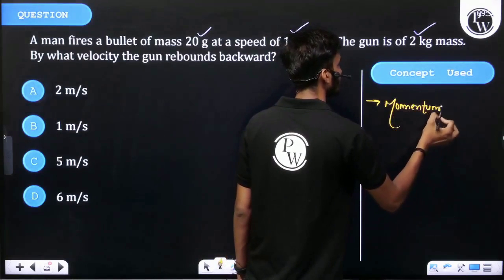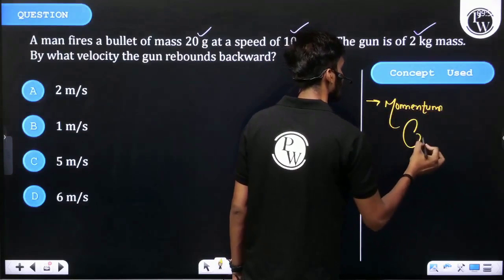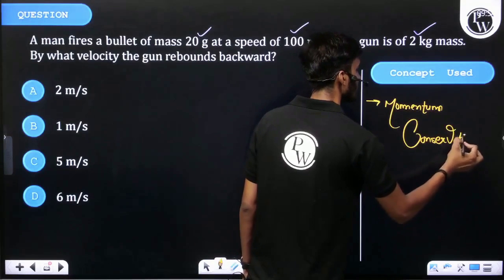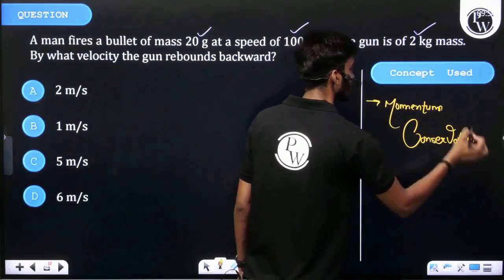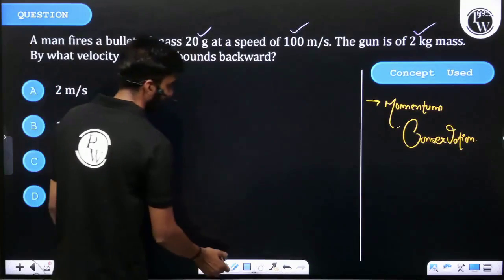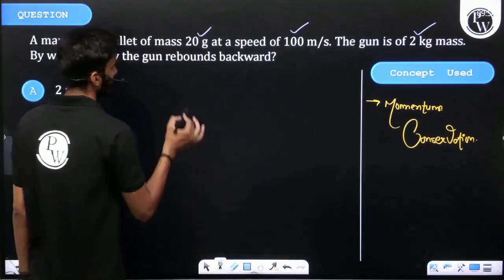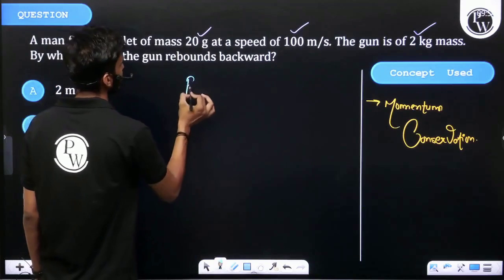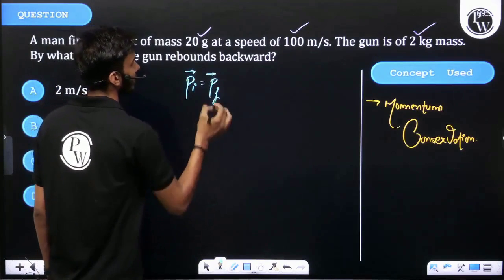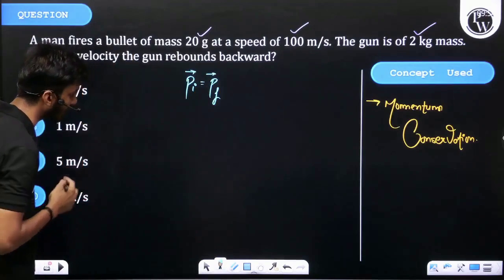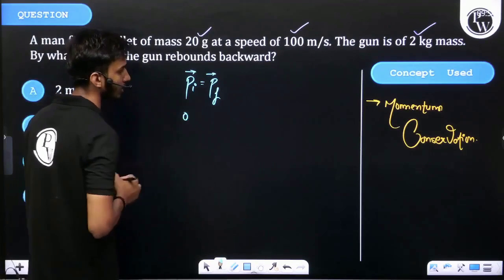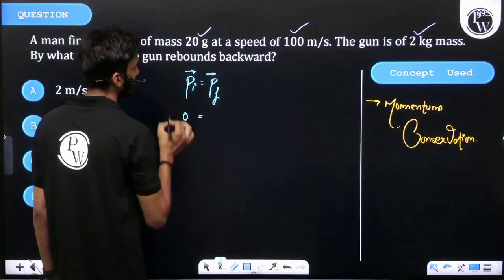The concept is momentum conservation. We can write that the initial momentum is equal to the final momentum. Initially, the gun and bullet are both at rest, so the initial momentum is zero.